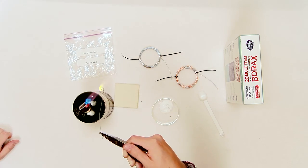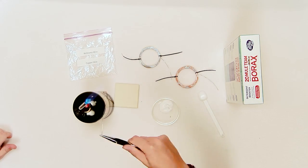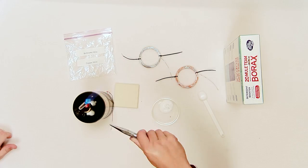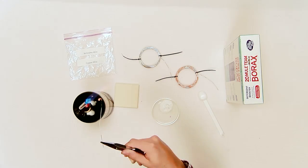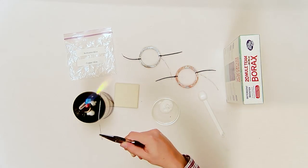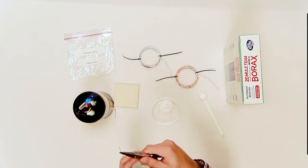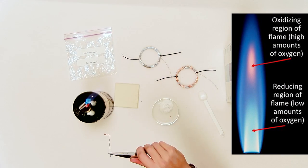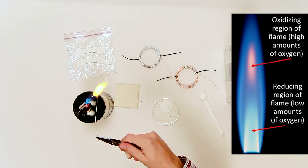Using a Bunsen burner or propane torch, heat the loop at the end of one of the copper wires until it gets red hot. Be sure to use the pliers to hold the wire while heating. Be sure that the Bunsen burner is turned up high. You should be able to clearly see the reducing region and oxidizing region of the flame.